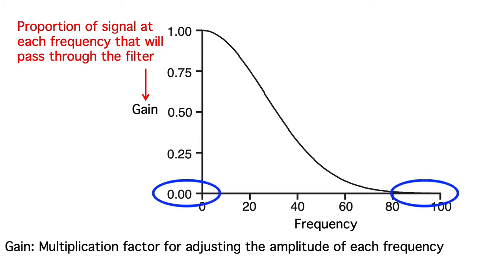A gain of 0 means that the frequency is completely blocked. A value of 1 means that the frequency is completely passed. And a value of 0.75 means that the frequency is reduced to 75% of its original strength. The frequency response function shown here is a low-pass filter. The low frequencies have a gain near 1 and are passed, and the gain drops to 0 for the highest frequencies.